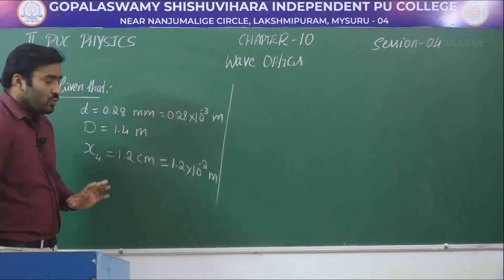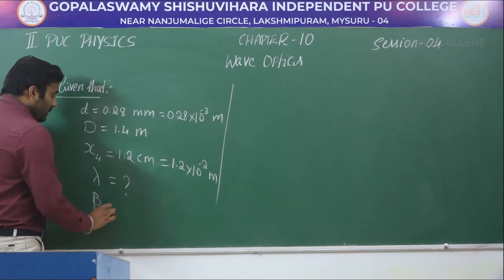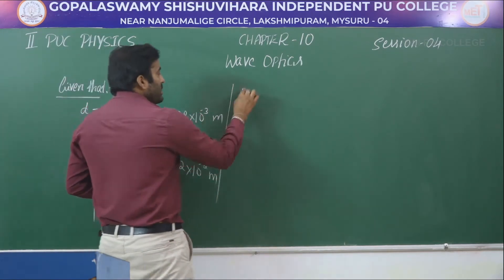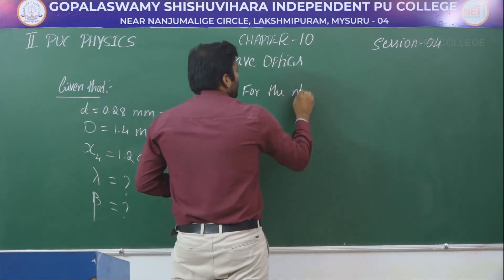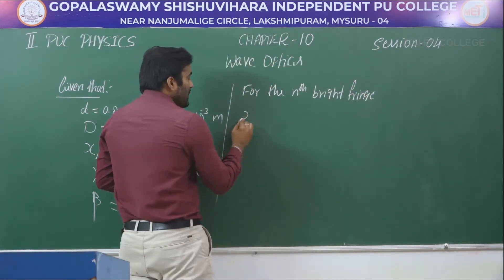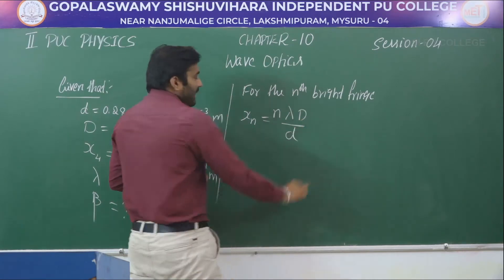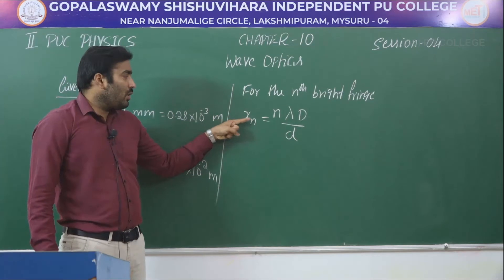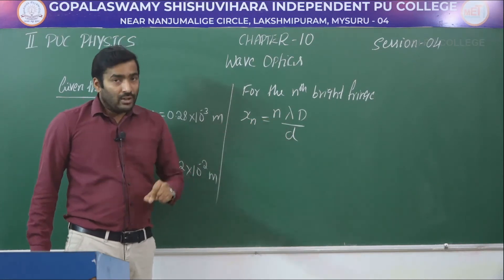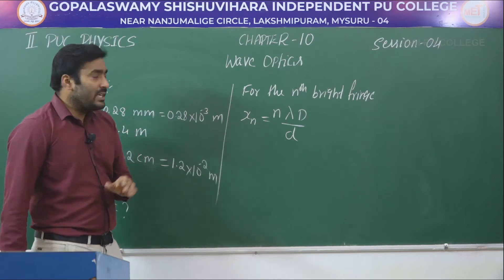We need to calculate the wavelength of the light used and the fringe width beta. For the nth bright fringe, the position is given by xₙ = n × lambda × D / d, where n is the integer, lambda is the wavelength, capital D is the distance from slit to screen, and small d is the distance between the two slits.